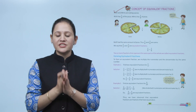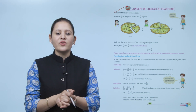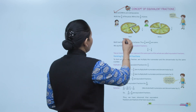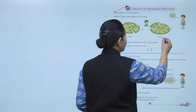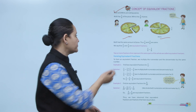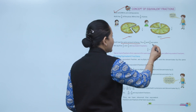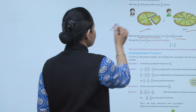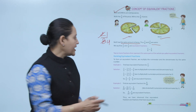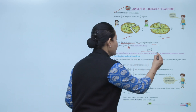Next is the concept of equivalent fractions. Equivalent fractions are equal fractions whose values are equal. Nishi and Mintu are eating a pizza. Nishi has 1 by 4 of pizza and Mintu has 2 by 8 of pizza. Both Nishi and Mintu have the same amount of pizza — 1 by 4 and 2 by 8 are equal, so 1 by 4 and 2 by 8 are equivalent fractions.